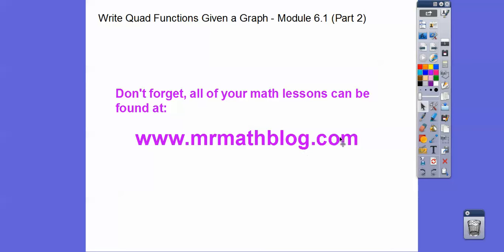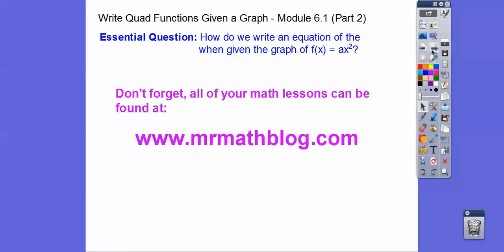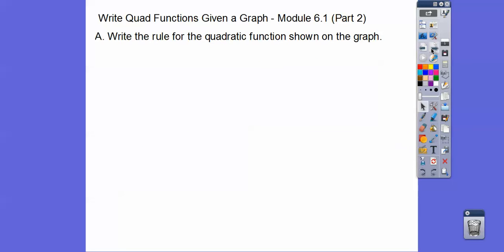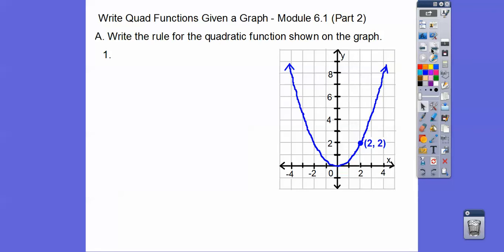Don't forget all your groovy lessons can be found at that website right there. So how do we write an equation when given the graph of f(x) = ax²? We're going to write this equation right here. Actually, we're going to write g(x) because f(x) is typically our parent graph. So write the rule for the quadratic functions shown on the graph. Here's the first one right here.